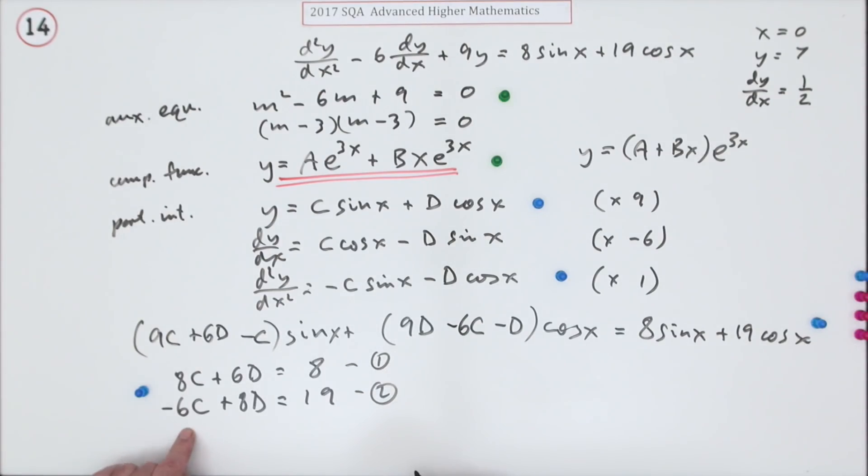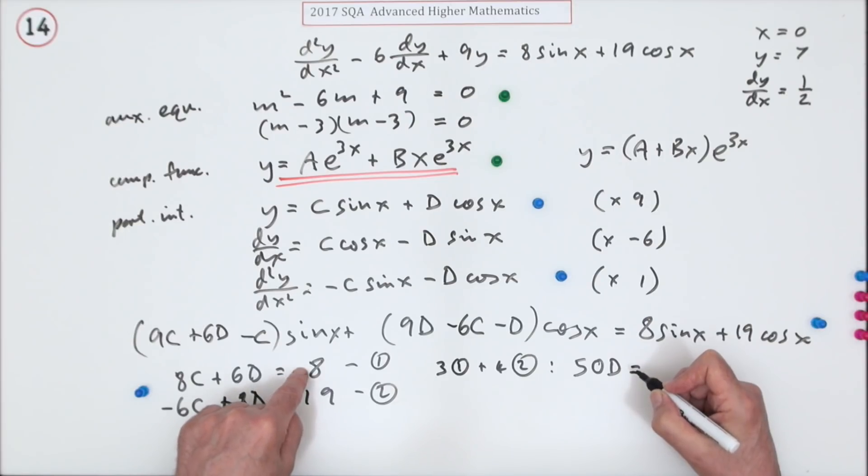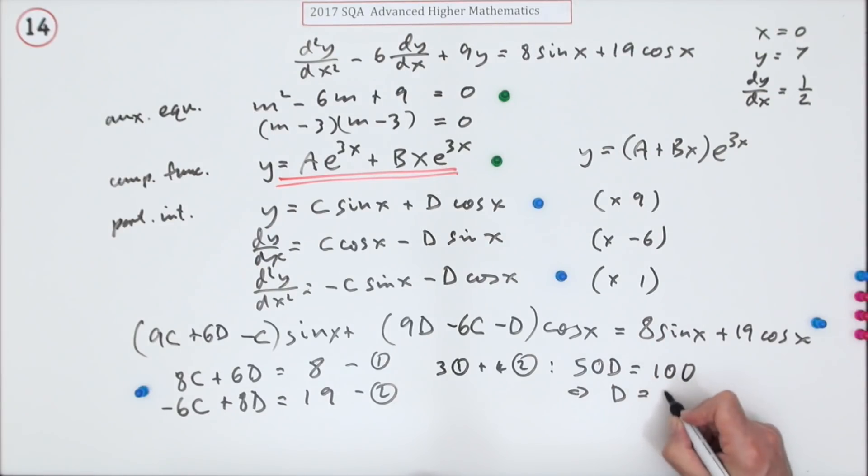The next mark's just for sorting that out. That's equation 1 and that's equation 2. In order to sort them out I get rid of those C's just by adding them, but I'll need 3 of them and 4 of them. So if I take 3 of number 1 and add on 4 of number 2, they disappear obviously and then I'll have 18 and 4 of them, 32 - 18 and 32 is 50 lots of D. Same here: I'll have 24 and 4 less than 80, that comes to 100. So that means D equals 2. Now that you know what D equals you can put it back into one of the other ones: 8C plus 12, take it across to minus 4, so C equals negative a half.